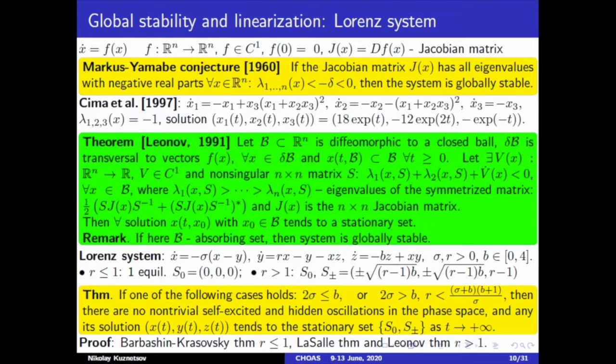However, in 1991, Gennady Leonov, developing the ideas of Krasovsky, obtained an effective criterion of global stability. His criterion together with the Barbashin-Krasovsky and LaSalle theorem allows us to obtain an inner estimation of the global stability domain in the space of parameters for the Lorenz system. In the case of one equilibrium point, we use the Barbashin-Krasovsky theorem, and for the case of three equilibrium points, we apply LaSalle's theorem and Leonov's criterion.